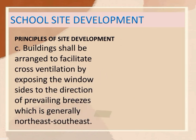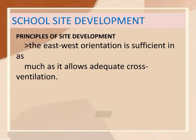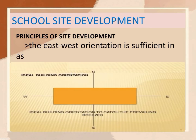Another principle of site development is that buildings shall be arranged to facilitate cross-ventilation by exposing the window sides to the direction of the prevailing breezes, which is generally northeast-southeast. The east-west orientation is sufficient inasmuch as it allows adequate cross-ventilation.